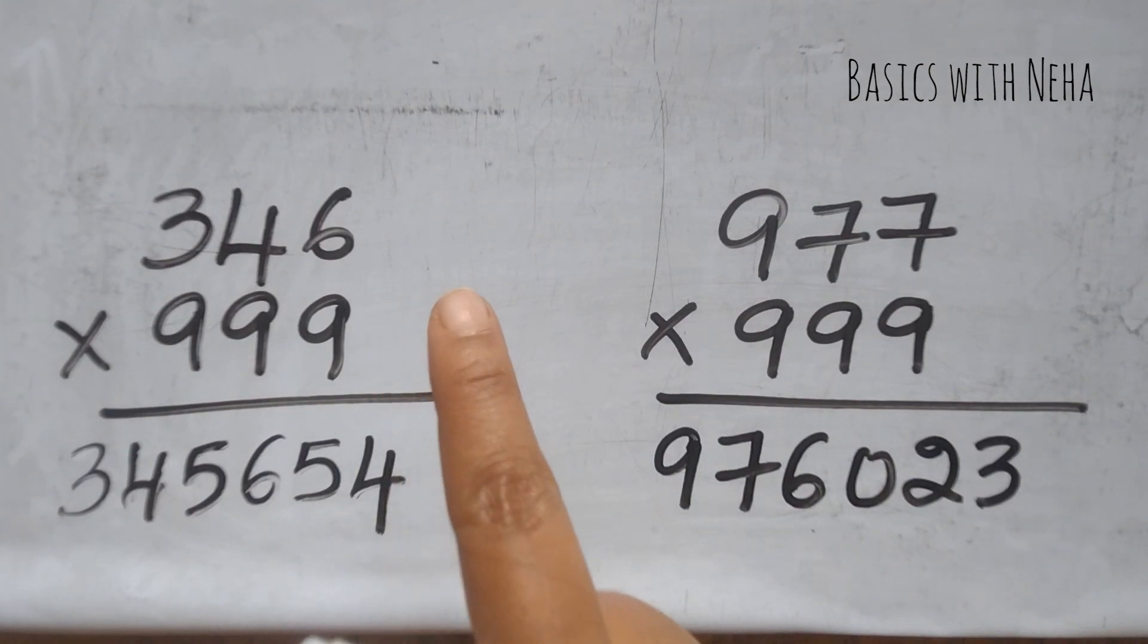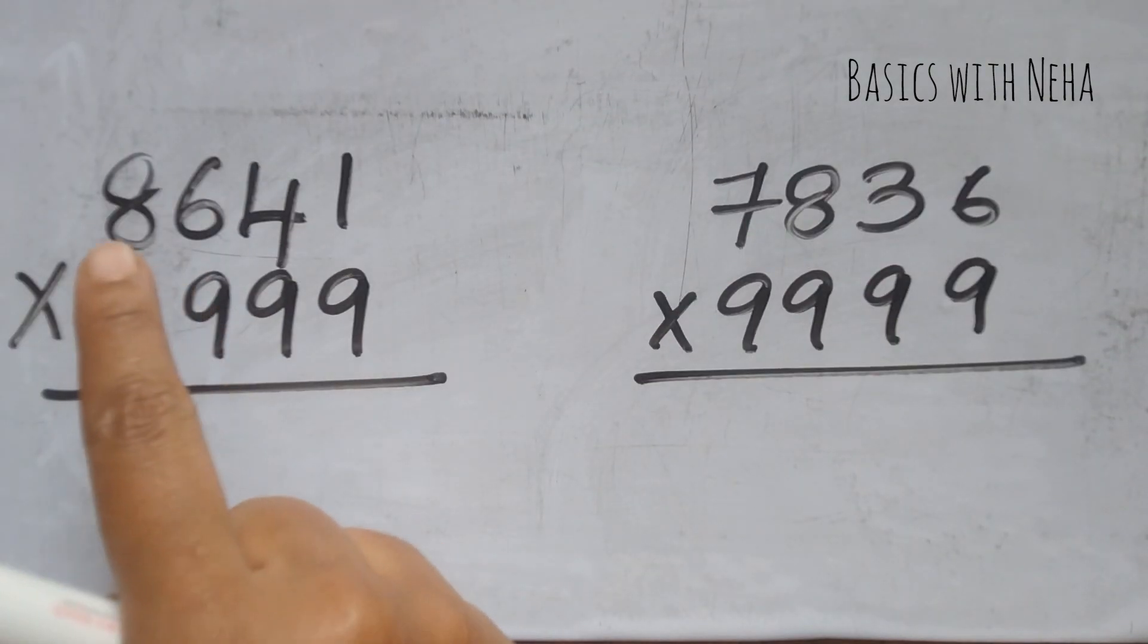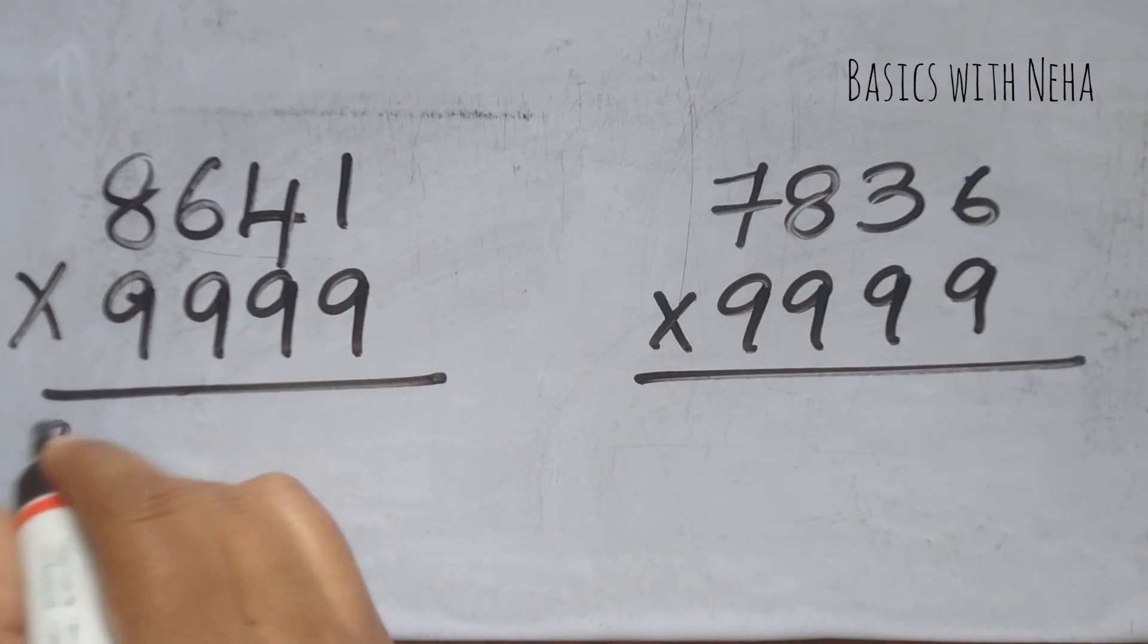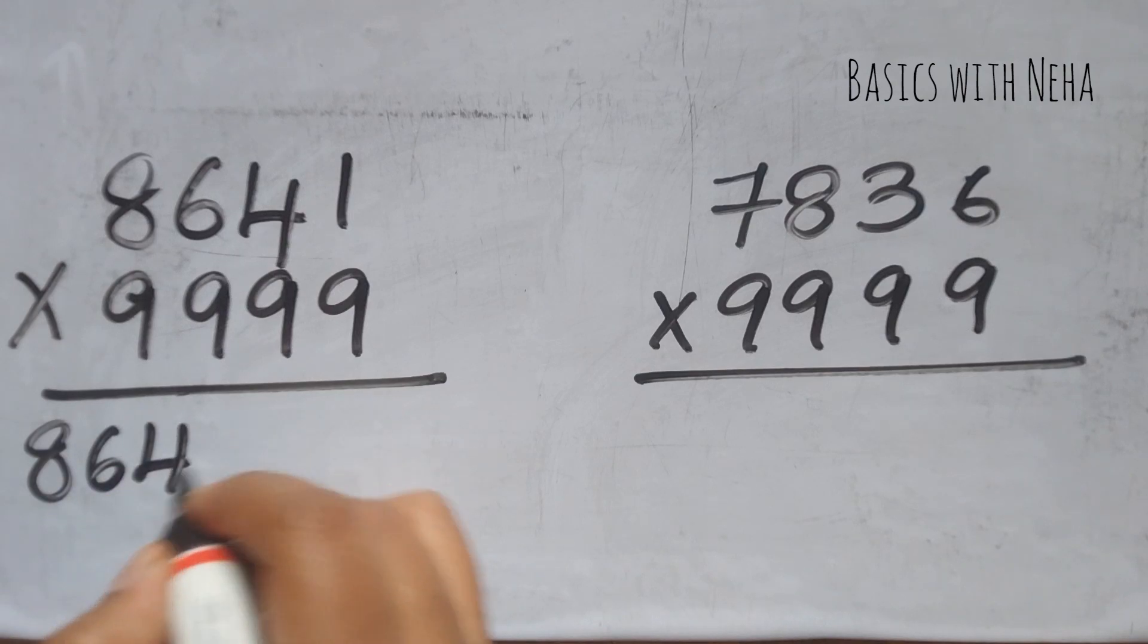Now let's try 4 digit into 9999. 8641 into 9999. The answer will be 8640.